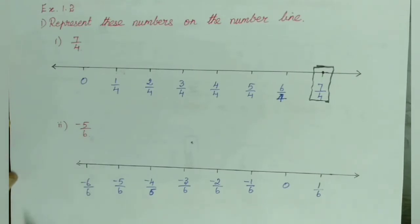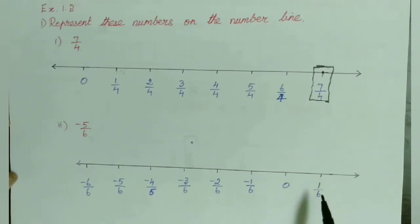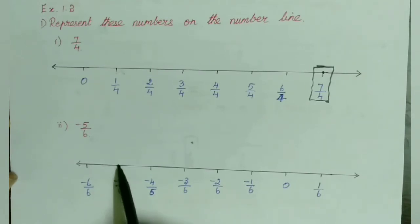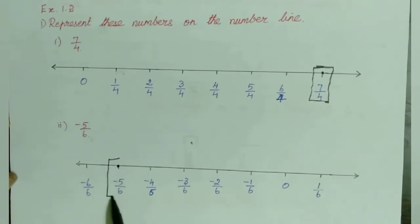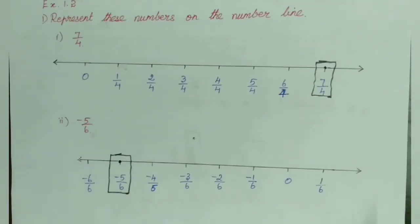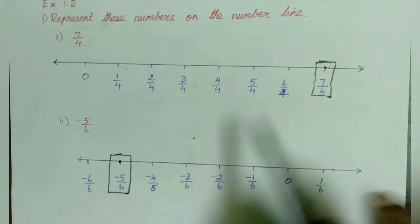Similarly, let us mark minus 5/6. Minus 5/6 is a negative number, so we are going to draw a number line which has both positive and negative numbers: 1/6, 0, minus 1/6, minus 2/6, minus 3/6, etc. Here it is minus 5/6, so keep a dot and draw a box — that's it, we have marked minus 5/6.